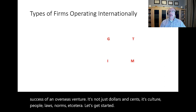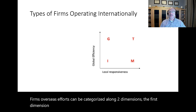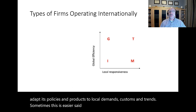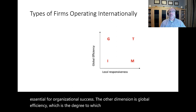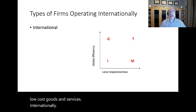Firms' overseas efforts can be categorized along two dimensions. The first dimension is local responsiveness — the degree to which a firm can adapt its policies and products to local demands, customs, and trends. Sometimes this is easier said than done, and other times it is absolutely essential for organizational success. The other dimension is global efficiency, which is the degree to which a firm can compete and provide low-cost goods and services internationally.